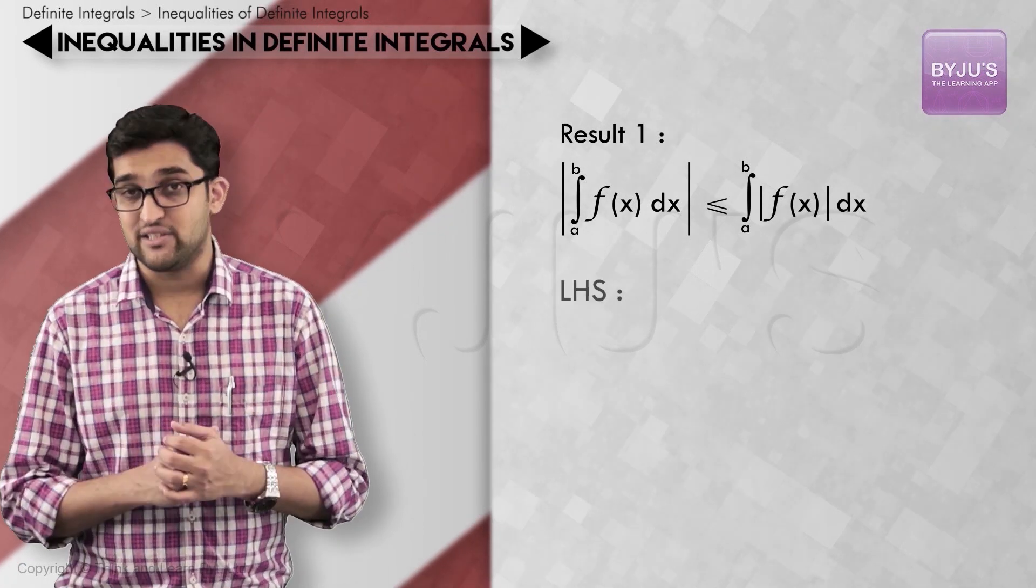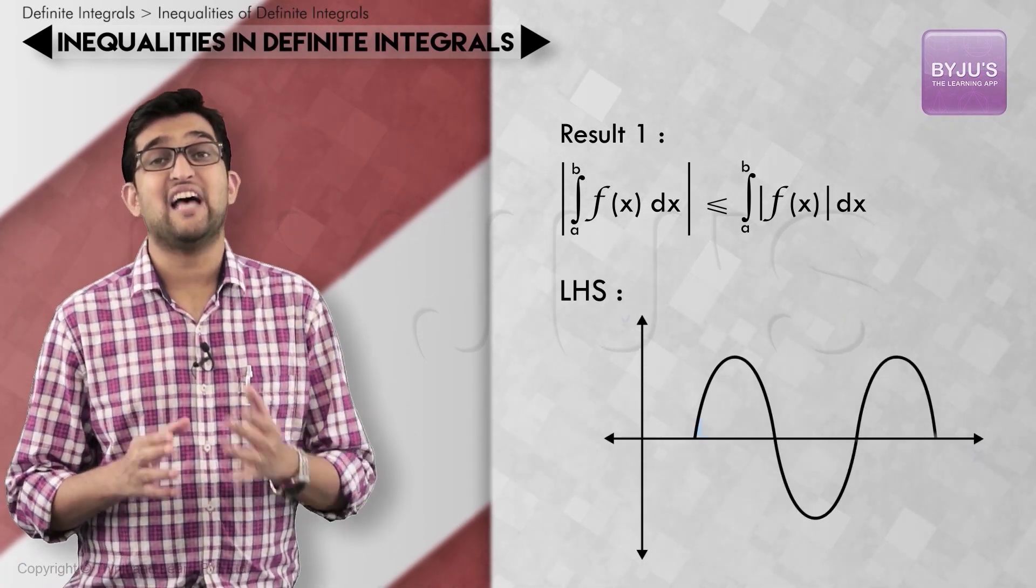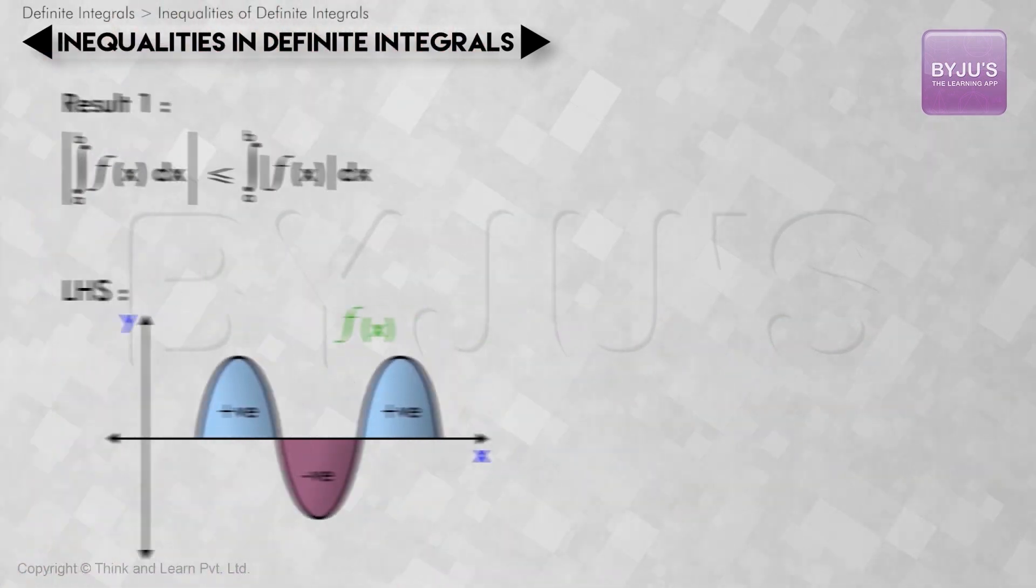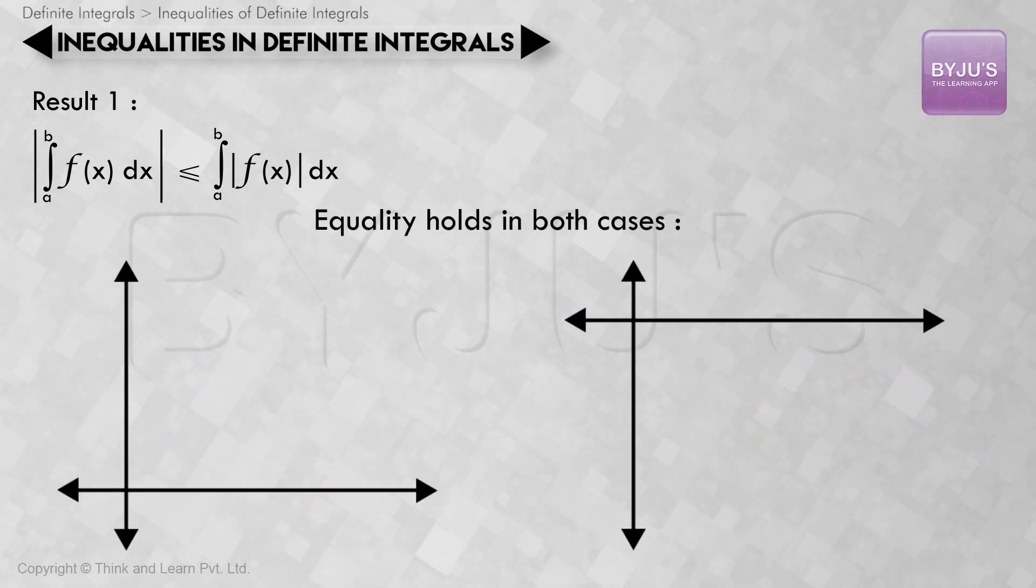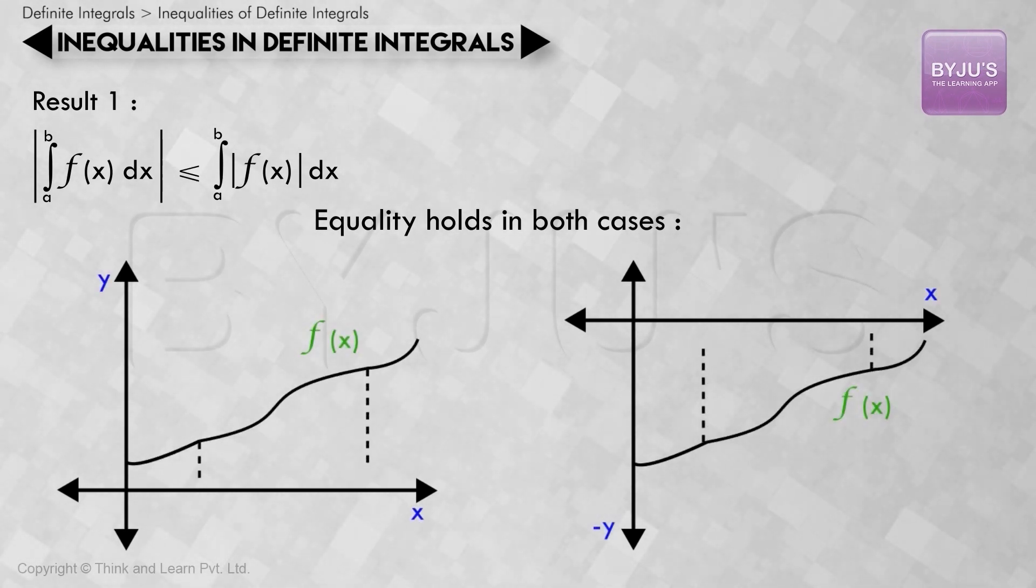The LHS takes the absolute value of the final integral, while the RHS gives the sum of all unsigned areas. That is, it won't cancel out the area above and below the x-axis, but instead adds their absolute values. Here the equality sign holds in case the graph is on the same side of the x-axis in the interval a, b.